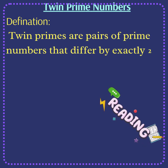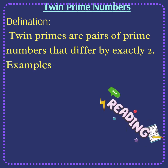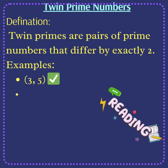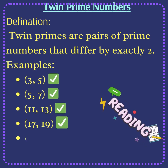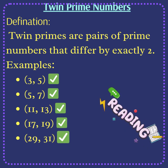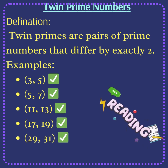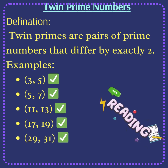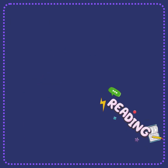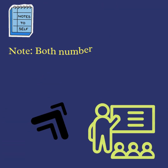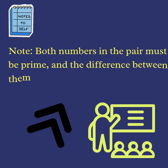More examples of twin primes: eleven and thirteen, seventeen and nineteen, twenty-nine and thirty-one. Note: both numbers in the pair must be prime, and the difference between them must be two.